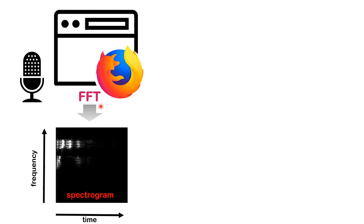If you remember from a previous video — I'm going to leave links here — every time you record something, you can do a Fourier transformation. FFT stands for Fast Fourier Transformation, and what this does is convert your signal from the time domain into the frequency domain. We plot the frequency as a function of time, and this represents the occurrence of a word. In the spectrogram, you can use machine learning to figure out what keyword has been uttered by a person.